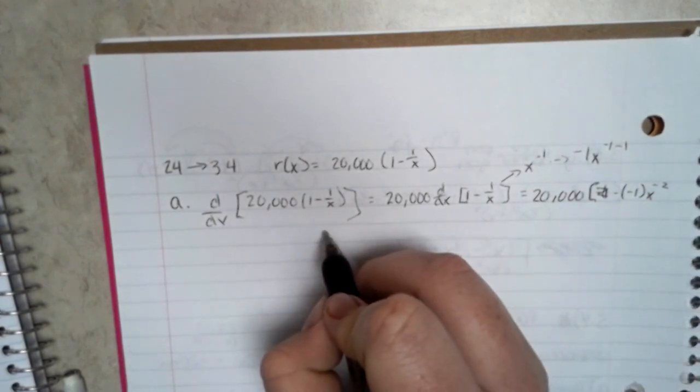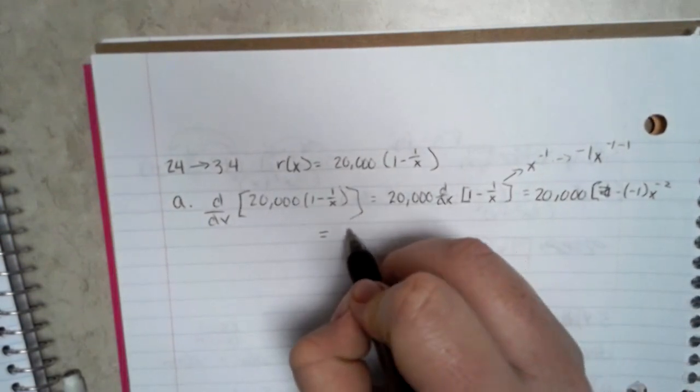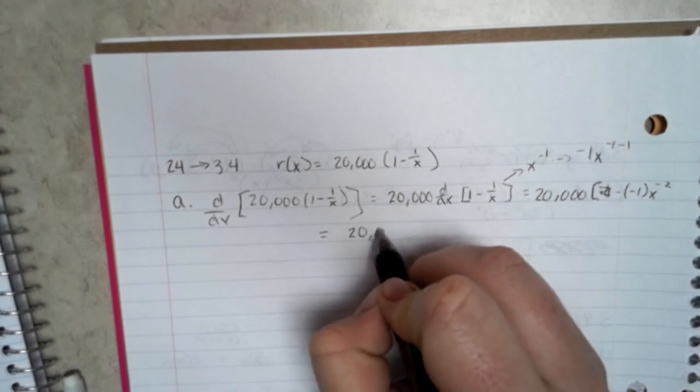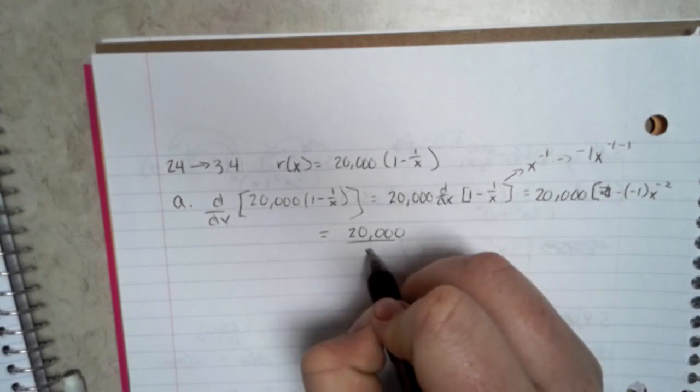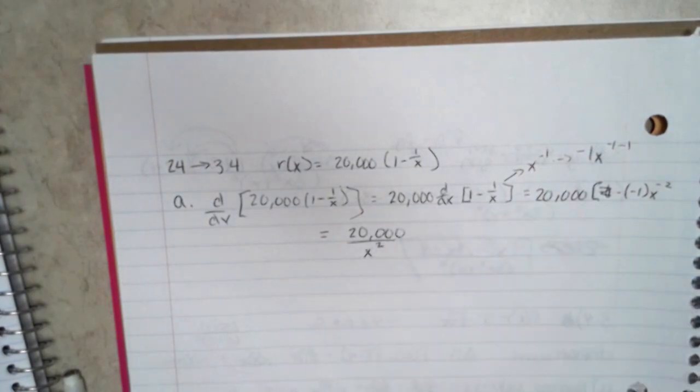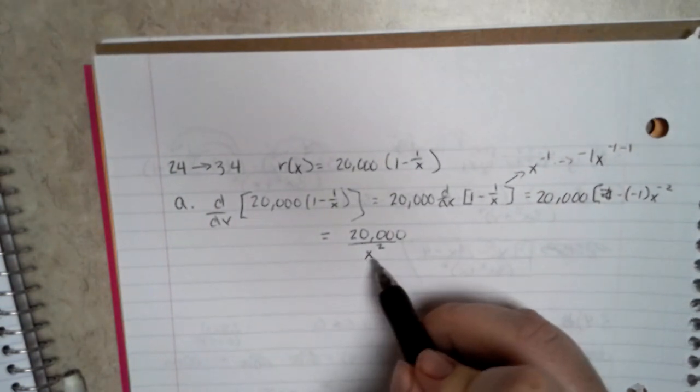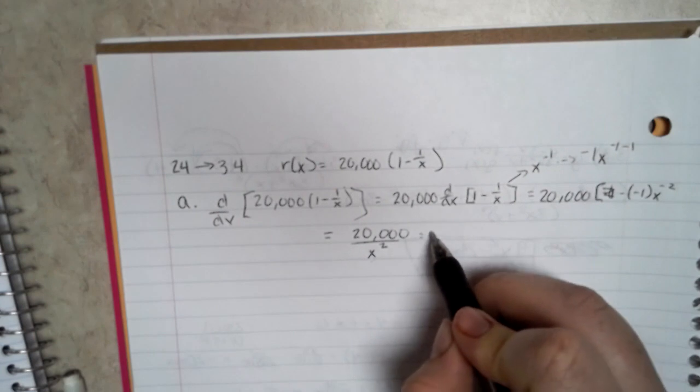So all together, if you want to put it back in fraction form, it would be 20,000 over x squared. And so what I did was plug in 100 for x right here, and you come out with 2.